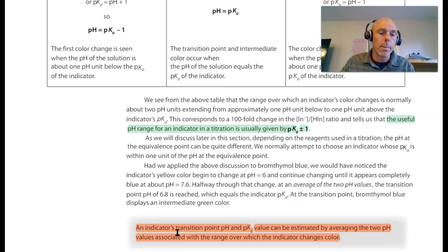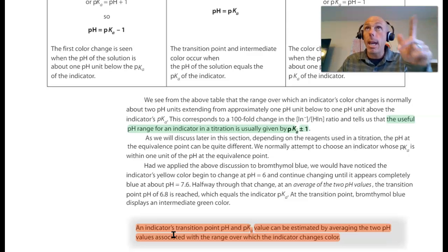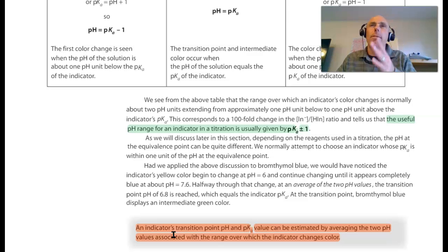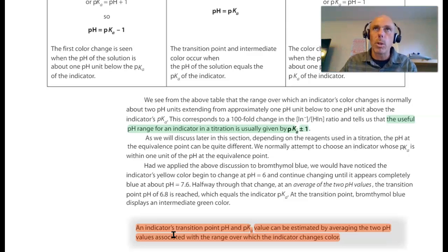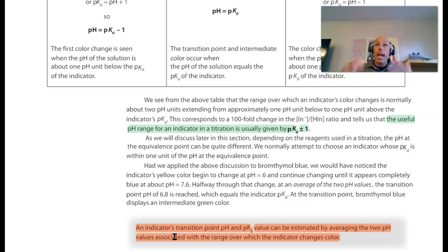The indicator's pKa can be estimated by averaging the two pH values over which the indicator changes color. Meanwhile, if you're given a pKa of an indicator, you could estimate the pH range over which it changes color — it would be one lesser than that and one greater than that. So if an indicator has a pKa of 5.2, we would estimate that it starts changing color at 4.2 and would likely have finished changing color at 6.2. At 4.2 it's in its acidic color; at 6.2 it's in its basic color; and between 4.2 and 6.2 it's on its way.